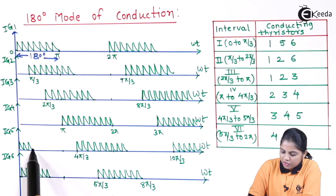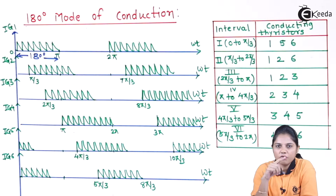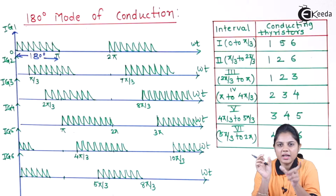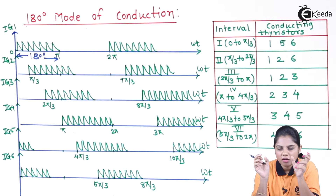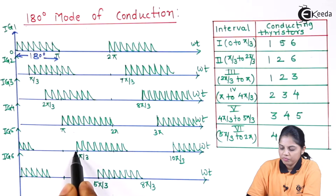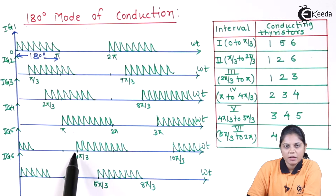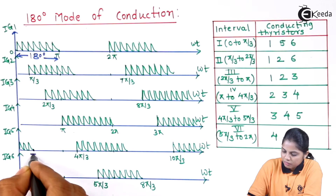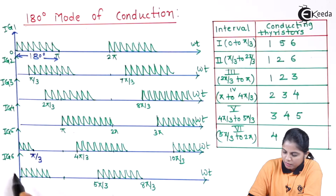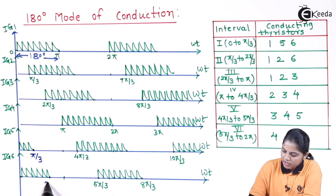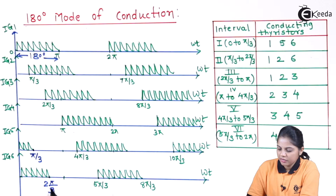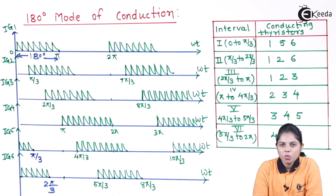This difference of 60 degrees should be maintained. In 180-degree mode of conduction, an SCR will conduct for 180 degrees and remain off for the remaining 180 degrees of the complete 360-degree cycle. So if it is on from 0 to 180 degrees, the remaining 180 degrees it should be off. If you subtract 180 degrees from 4pi/3, you get pi/3 — meaning the fifth SCR will remain on till pi/3. And again, an SCR will remain on till 2pi/3. The difference between 2pi/3 and 5pi/3 is 180 degrees.